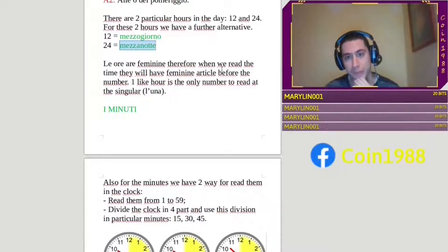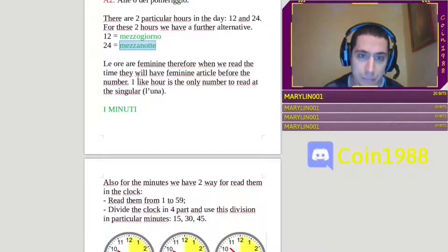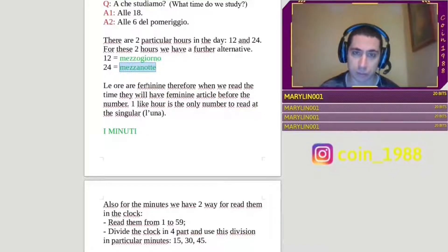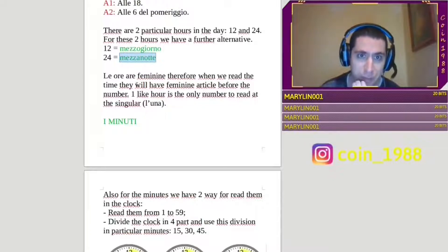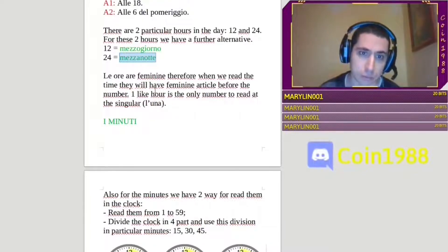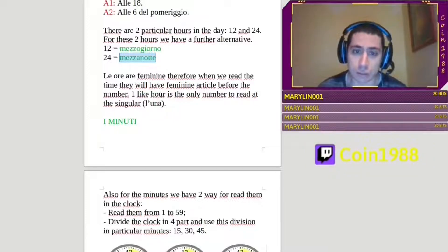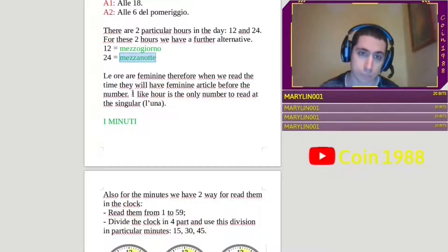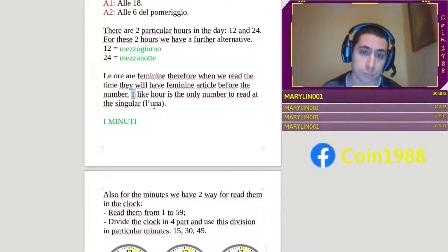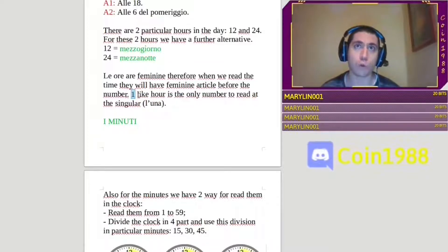Le ore are feminine. Therefore, when we read the time, they will have feminine articles before the number. So, when you answer to a question, like for example, if someone asks to you che ora è, you say the hours and before the hours you say the feminine article. So for example, le dieci, le is the article, dieci is the number. All the hours are plural, there is only one hour that you say at singular, it is one o'clock. So if there is una, you say l'una, it is singular, it is the only hour that you read at singular.